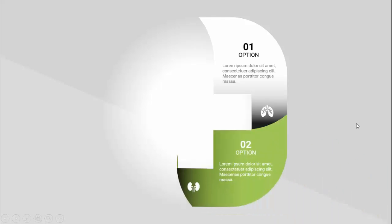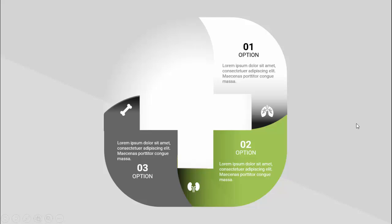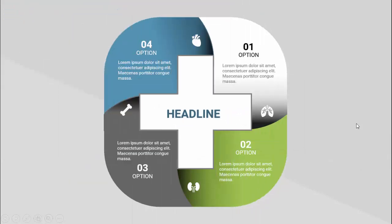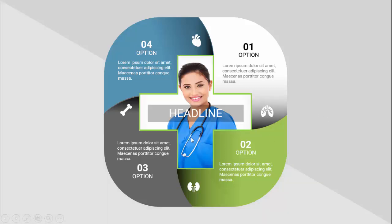In today's tutorial, I'm going to show you how to create a four-step medical slide in PowerPoint. When I click, the first option comes up — you can add the option number, detailed text, and icon. Clicking again shows the second option with a different color, then the third, then the fourth. You can add your headline here. I've also created one more slide with a doctor image in the center.